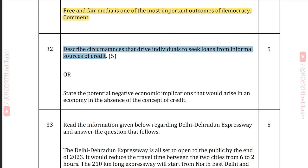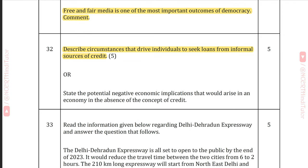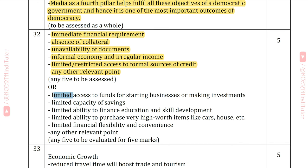Question 32: Describe circumstances that drive individuals to seek loans from informal sources of credit. Answer: Immediate financial requirement, absence of collateral, unavailability of documents, informal economy and irregular income, and limited or restricted access to formal sources of credit. Alternatively: State the potential negative economic implications in an economy without the concept of credit. Answer: Limited access to funds for starting businesses or investments, limited capacity for savings, limited ability to finance education and skill development, limited ability to purchase high-value items like cars and houses, and limited financial flexibility and convenience.